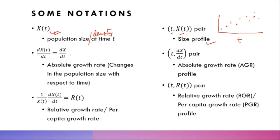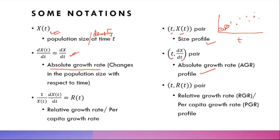Another commonly used notation is dx/dt, also called the absolute growth rate — it represents absolute changes and has a unit. If you have two time point observations, the difference between them is the absolute growth rate. When you plot time versus absolute growth rate, we call it the AGR profile. The AGR is associated with a unit of size or density.